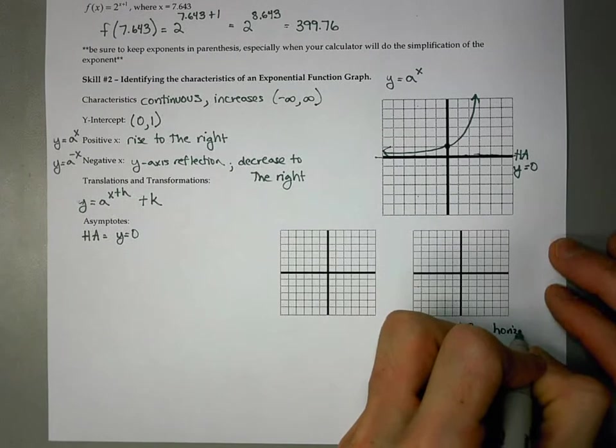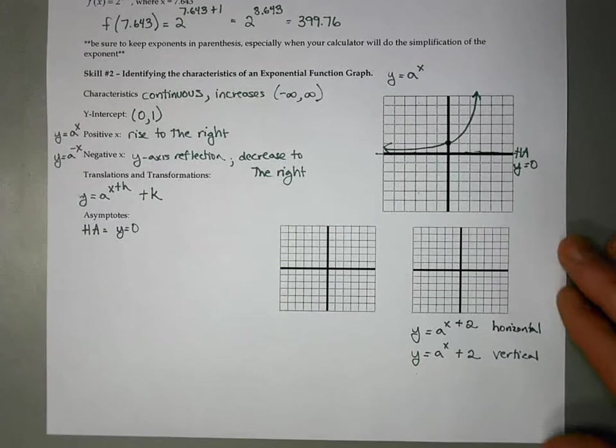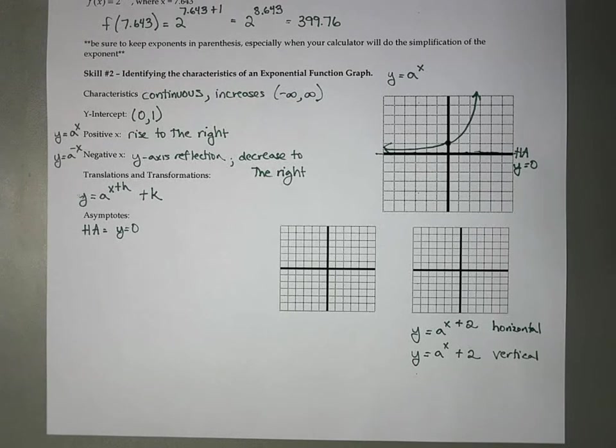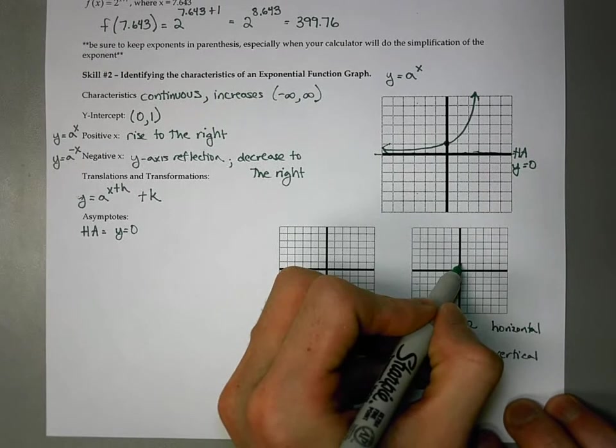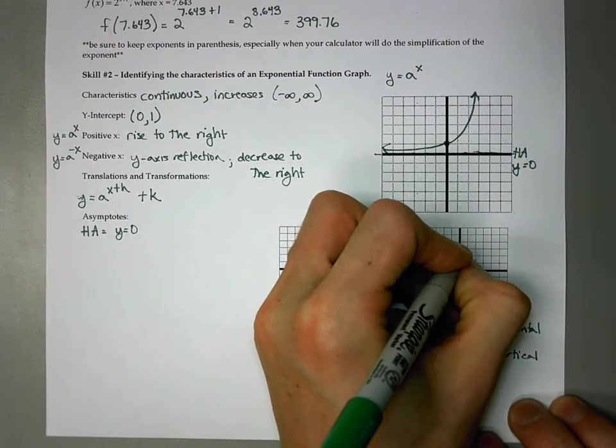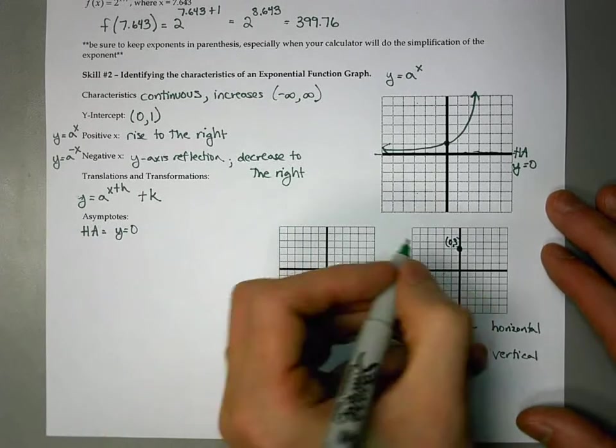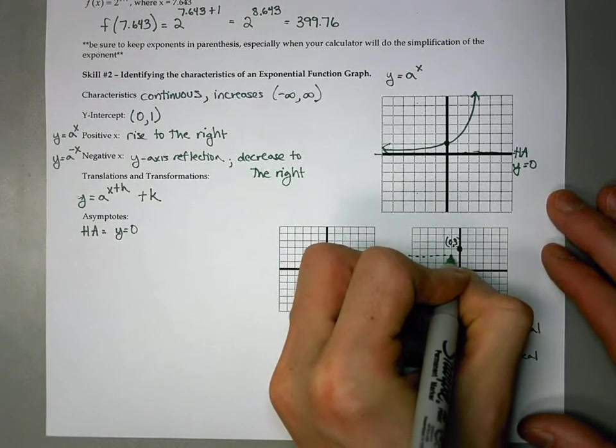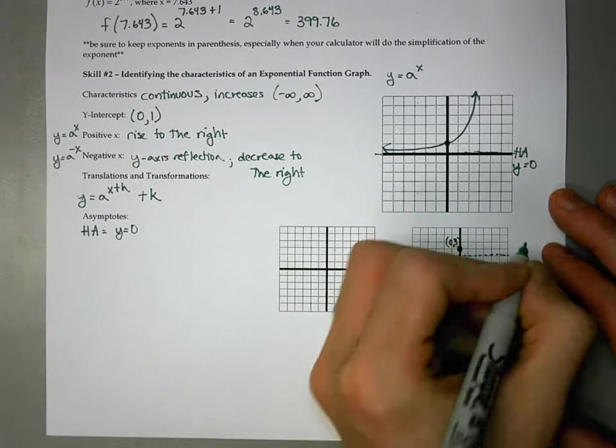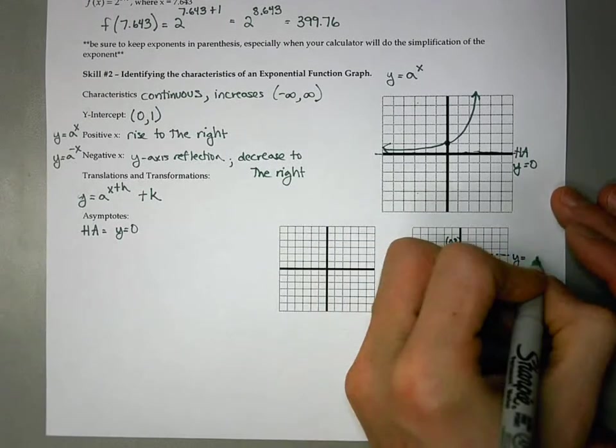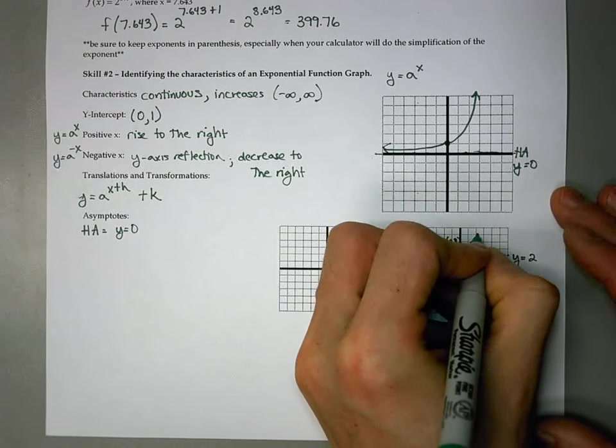If I were to graph out that vertical shift, everything is going to be raised two units. So my parent function was originally at (0, 1). It's now going to be at (0, 3). And my horizontal asymptote that was originally at y equals 0 is now going to be at y equals 2.